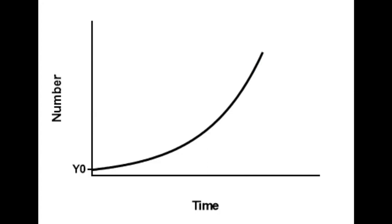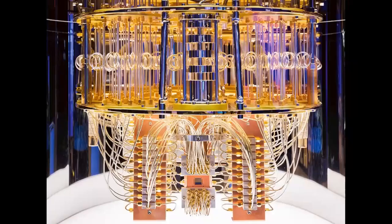This massive rate of improvement in computing power might continue just like this graph, or it might start going even faster. Google, Microsoft, IBM and others are spending billions of dollars developing quantum computers, which have the potential to massively outperform any computer we have today.